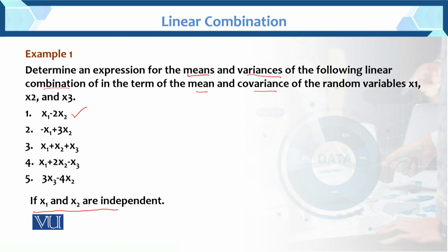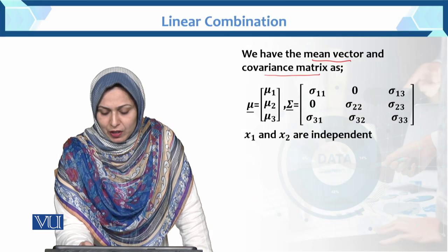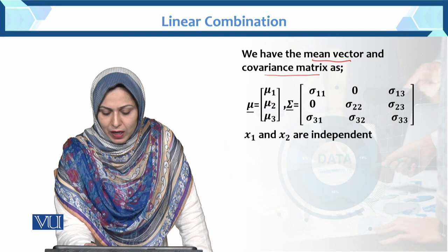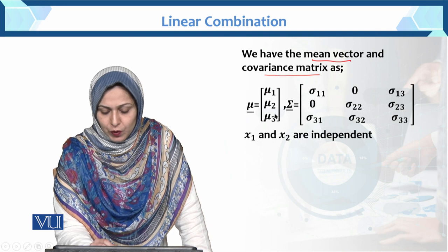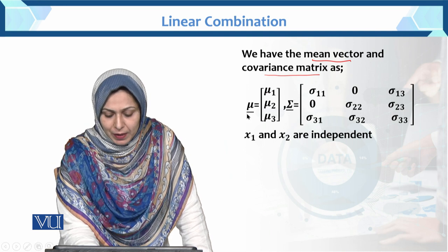We have all five parts to solve under the condition that x1 and x2 are independent. First part: z = x1 minus 2x2. We have the mean vector mu = [mu1, mu2, mu3] for variables x1, x2, x3.